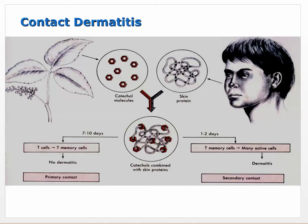Type 4 cell mediated hypersensitivity involves CD4 T cells (delayed) or CD8 T cell cytolysis, working together and leading to sensitized T cells causing cell and tissue injury and release of inflammatory factors. With poison ivy, catechol molecules react with certain skin proteins in some people. When the immune system recognizes this, memory T cells activate many cells within one to two days, causing signs of inflammation as T cells send out inflammatory signals.